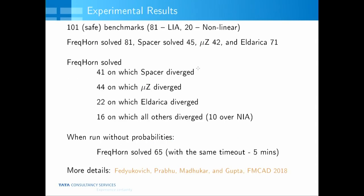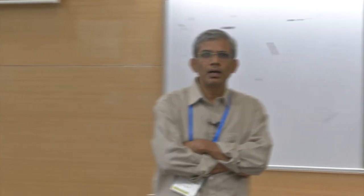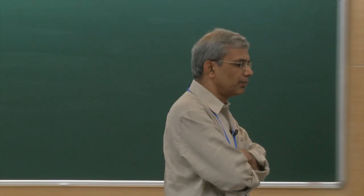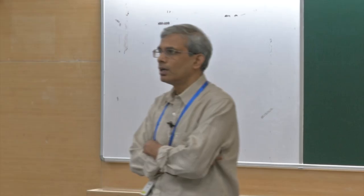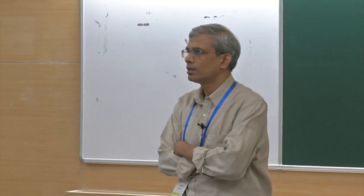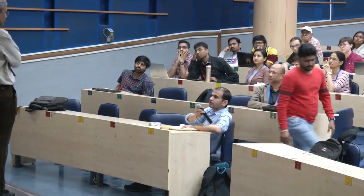We tested this on several benchmarks in a tool called Frequon. With a 5-minute timeout, the technique does help scale up. It also helps discover disjunctive invariants. Probability assignment helps too: without probabilities, it solves 65 benchmarks; with probabilities derived purely from frequency of occurrence in the program, it solves 81. We do not use data to derive probabilities — data is used only to come up with likely invariants.